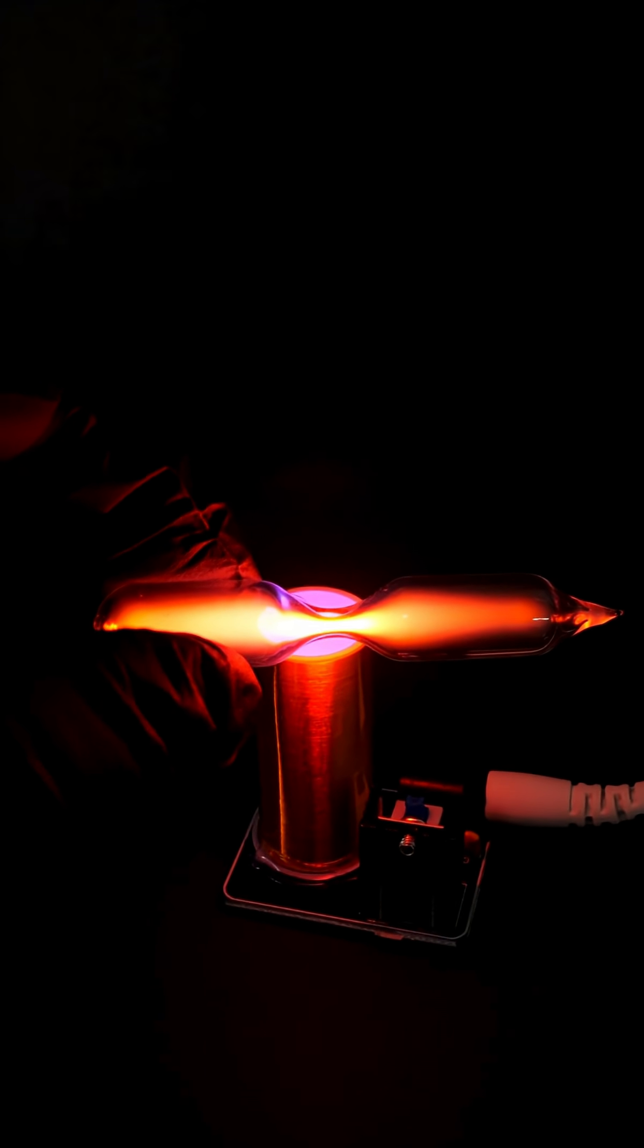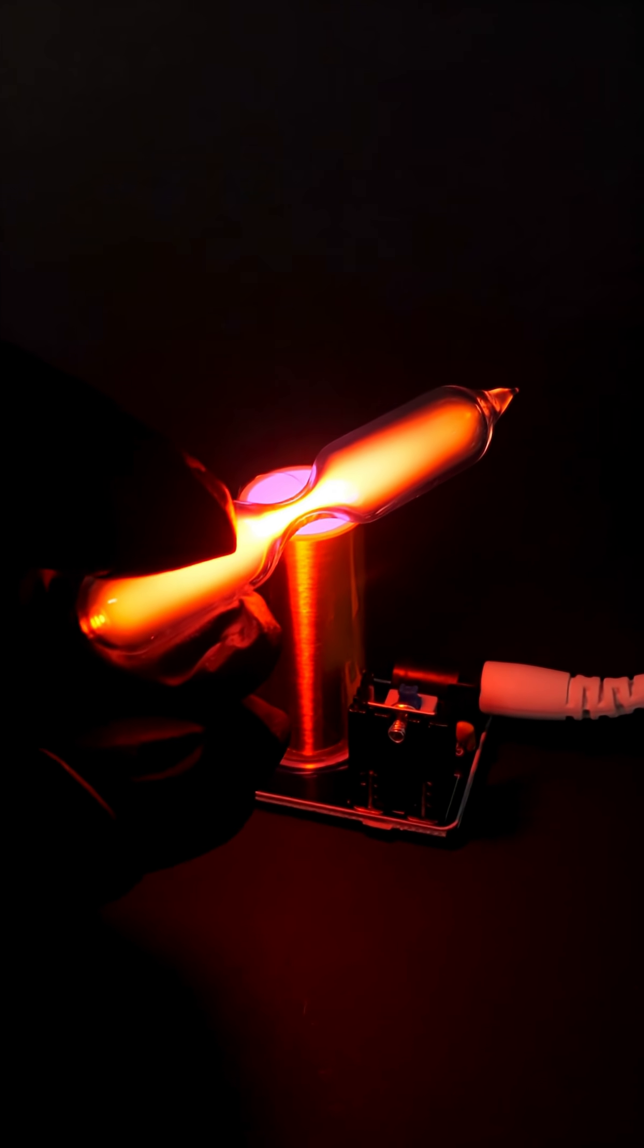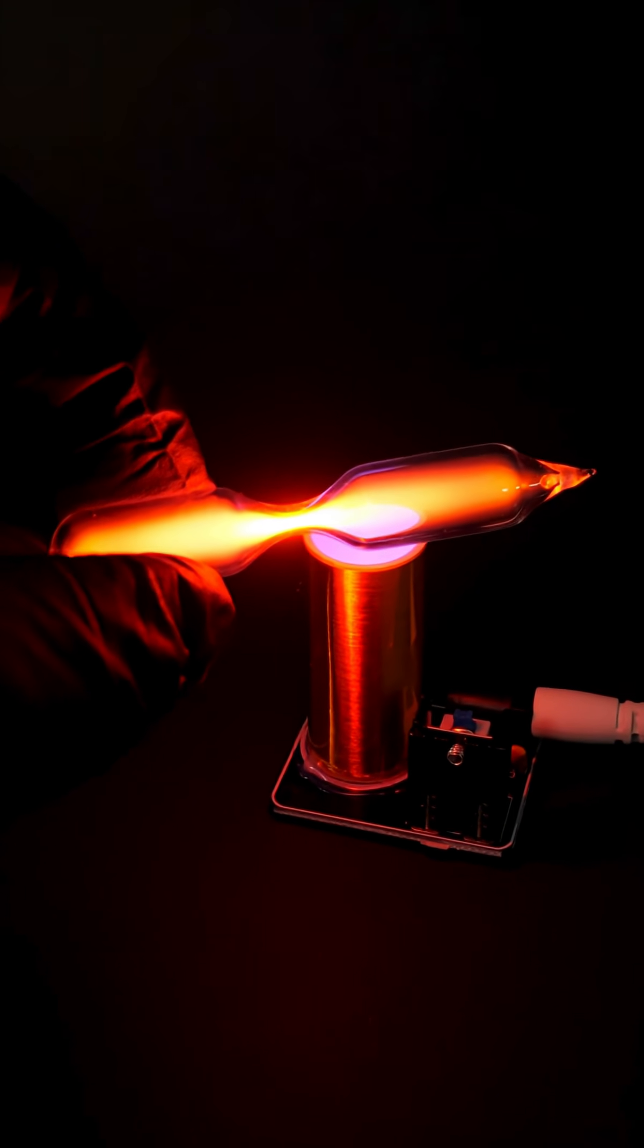In this vial there's glowing neon, the second noble gas in the periodic table and the most unreactive element in the universe. But neon can shine brightly, just like in those famous neon tubes.